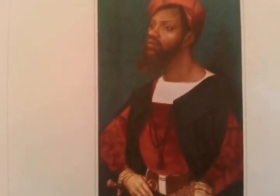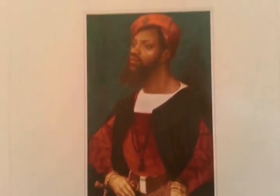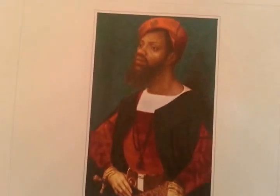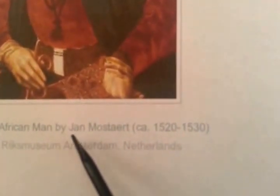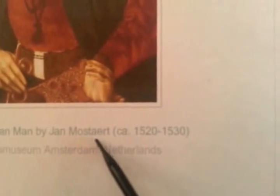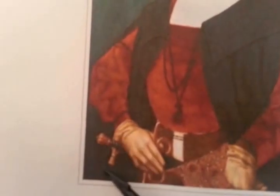Look at this guy here — he's in a military uniform as well, and he's also wearing a hat and has the beard. Now this guy — 'Portrait of an African Man' by John Musteret, 1520 to 1530. Look at this here — he has the sword here, this is the cross guard, and then the pommel is like a crown.